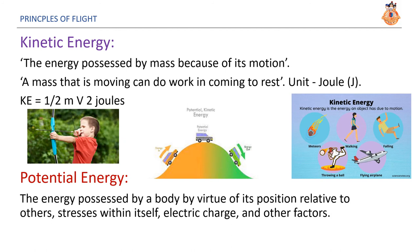Kinetic energy. The energy possessed by mass because of its motion. A mass that is moving can do work in coming to rest. The unit of kinetic energy is joule. Kinetic energy is equal to half into mass into the velocity squared. Potential energy. The energy possessed by a body by virtue of its position relative to others, force, stresses within itself, electric charge and other factors.